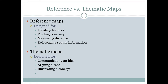Thematic maps, on the other hand, are more designed to communicate an idea or a theme. They can even be used to argue a case for something — why one type of land distribution might be better than another that's being proposed — or they could simply be used to illustrate a concept that you're talking about.